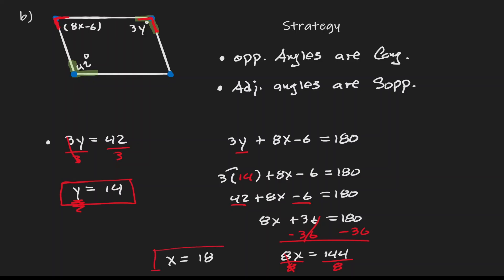Let's make sense of what we have done. We were given a quadrilateral, and we found that if we let x equal 18 and y equal 14, opposite angles are congruent and adjacent angles are supplementary. Those are sufficient conditions to conclude that this quadrilateral is a parallelogram.